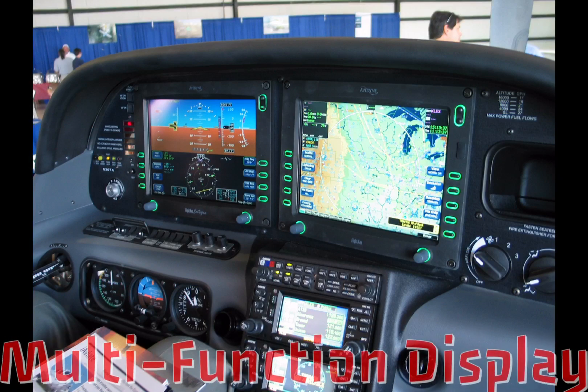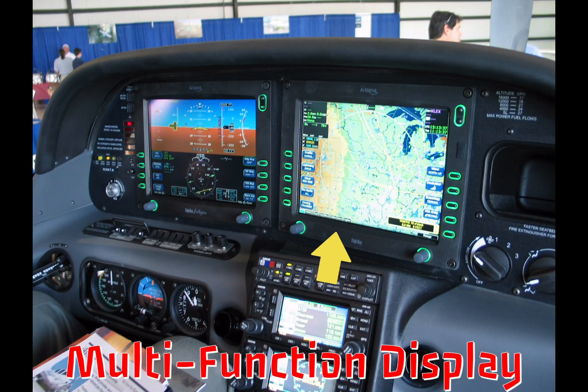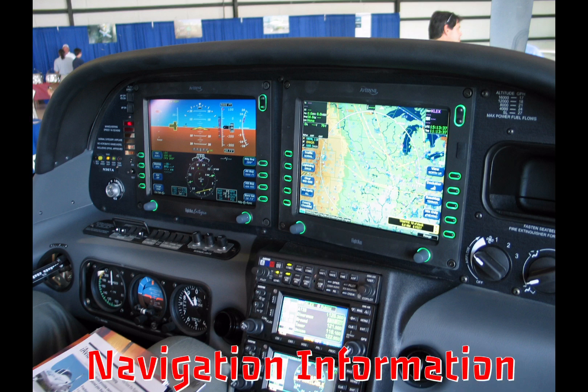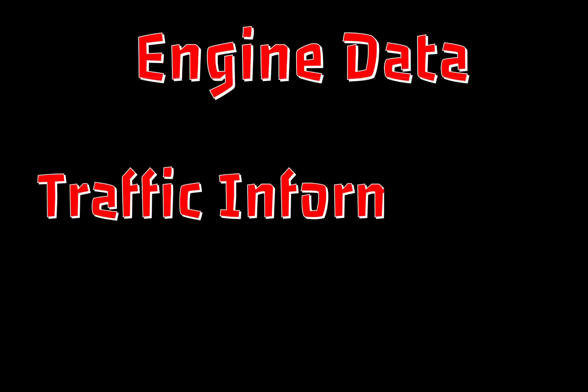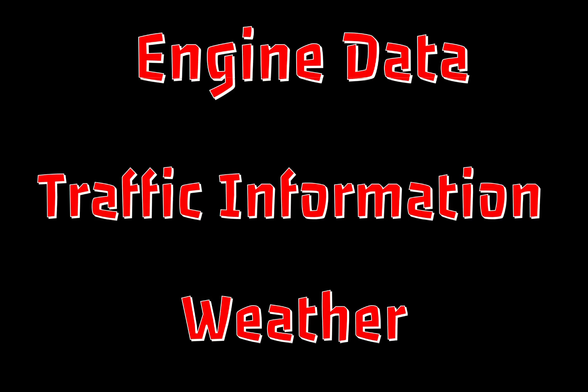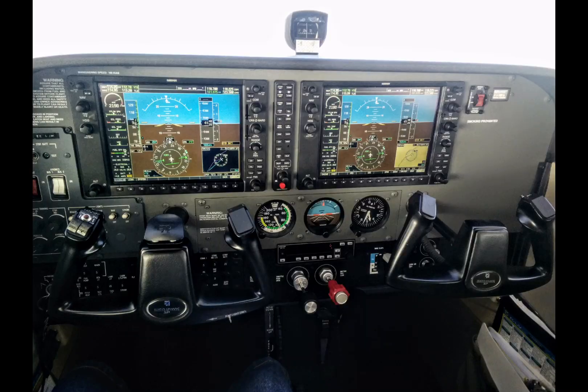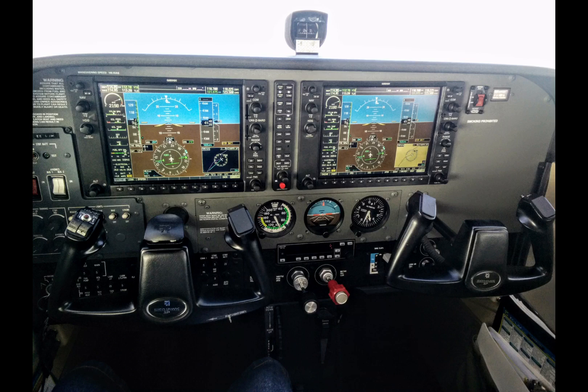One of these is the multifunction display, also known as the MFD. The MFD can display a lot of different types of information. One of these is navigation information, kind of like the moving map you see here. These can also display engine data, traffic information, weather, and a lot more. In fact, on some MFDs, at the push of a button, they can also become a primary flight display, which can be pretty handy if you lose your PFD for one reason or another.